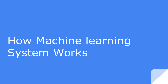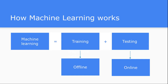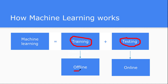Machine learning is basically a two-step process: one is the training process and another is the testing process. A combination of these two creates the total machine learning system. The training process is usually done in offline mode and testing is done in online mode.